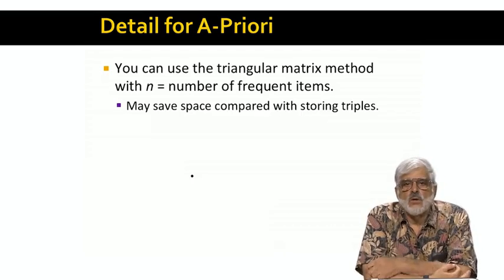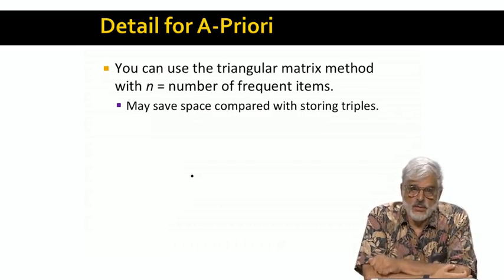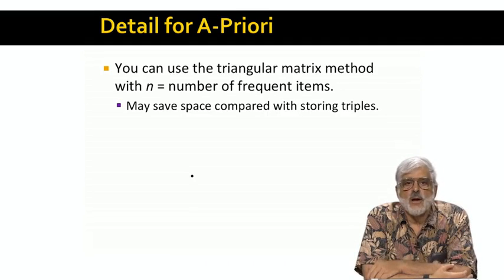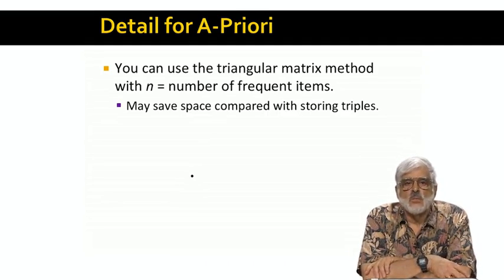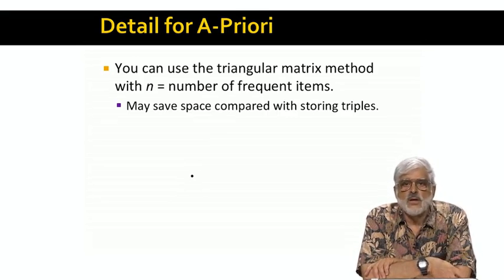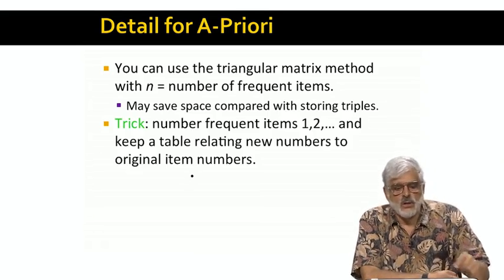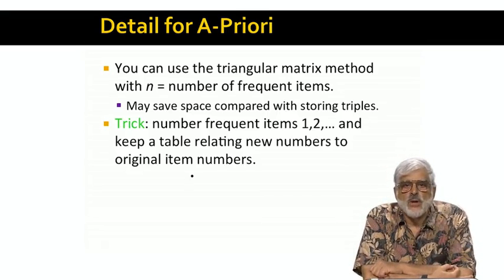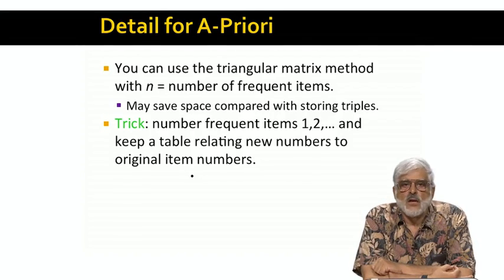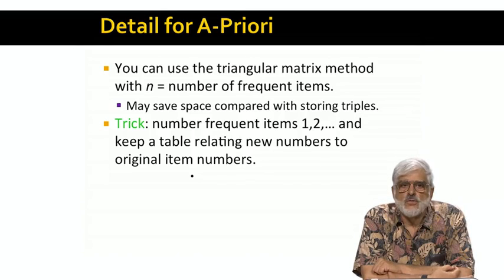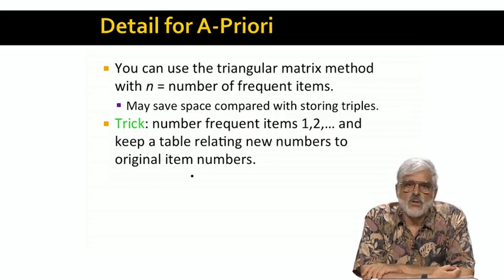We might suppose that when you're counting only pairs of frequent items, you have to use the tabular method to store counts. Since we hope that only a small fraction of the possible pairs need to be counted. Since the numbers associated with the frequent items are not likely to be consecutive, it looks like we can't use the triangular matrix with counts for only the pairs of frequent items. Or if we did, we'd use just as much space as if we were counting all pairs, and we might not have that much space. Fortunately, there's a simple trick we can use. We renumber the frequent items starting at one.